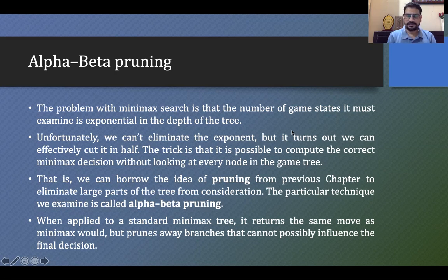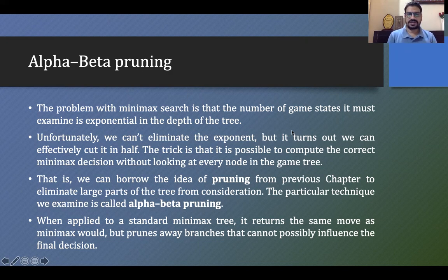Alpha-beta pruning minimizes the time of finding the solution. It uses a technique called pruning — we avoid some parts of the tree because those parts are assumed to not affect our final decision. So let's go into alpha-beta pruning and understand what this search technique is.